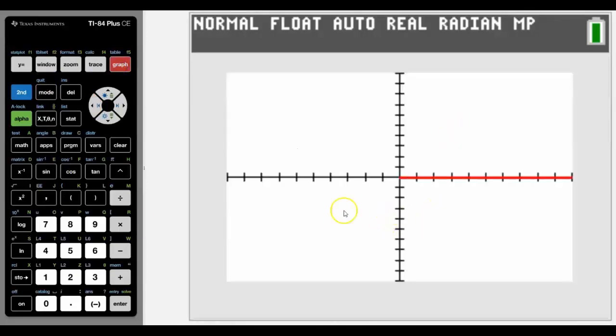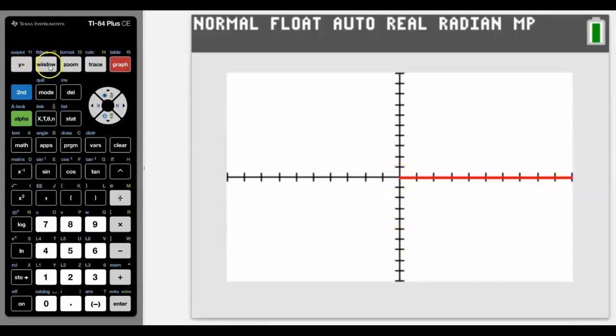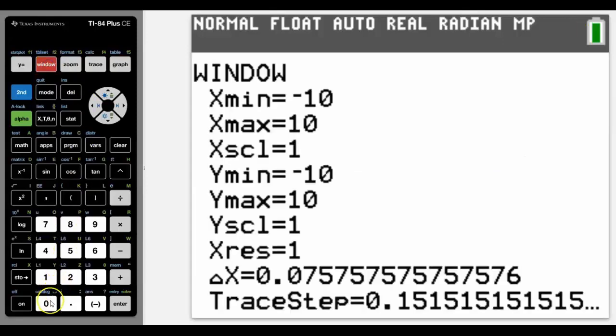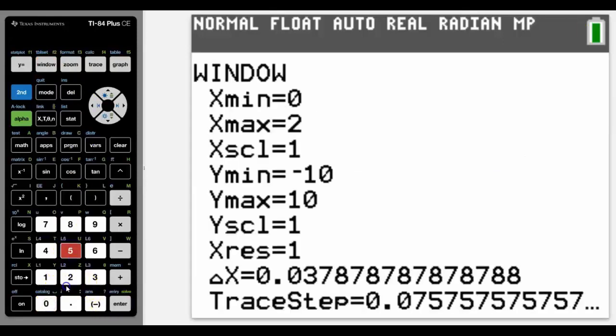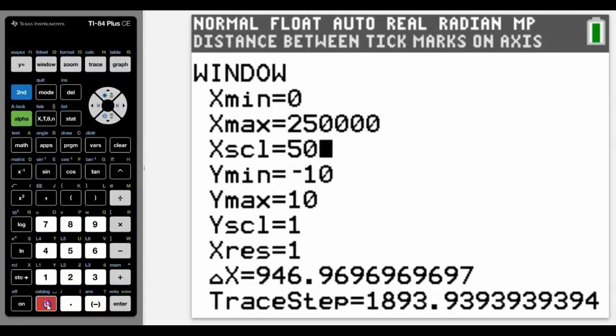Now if we go into Graph, well, we're on Zoom Standard here and we're only going to see it for the first $10, and most people are working on more than $10 in a year. So we're going to change it up to a quarter of a million, and obviously you could change your window to any values that you want.